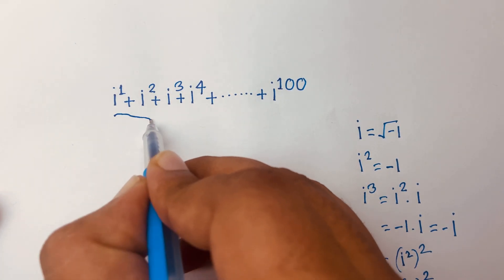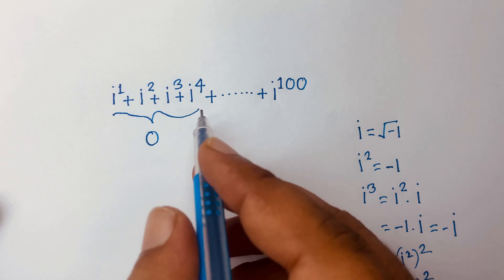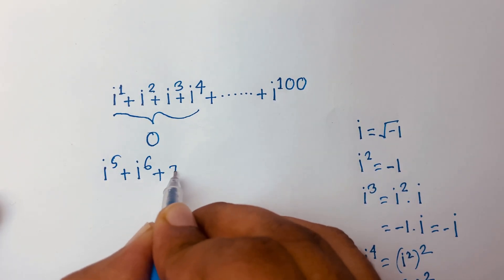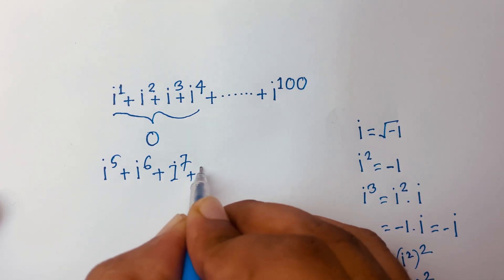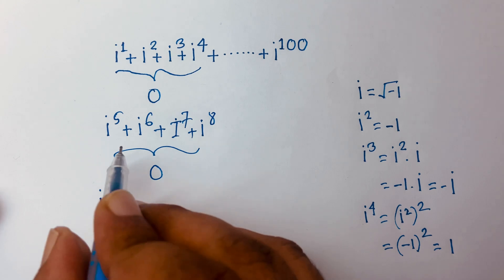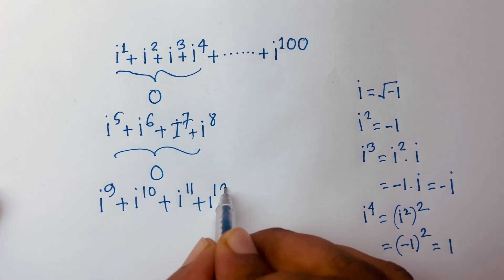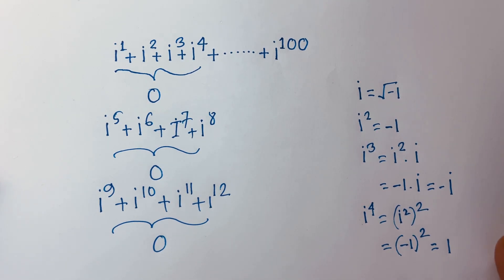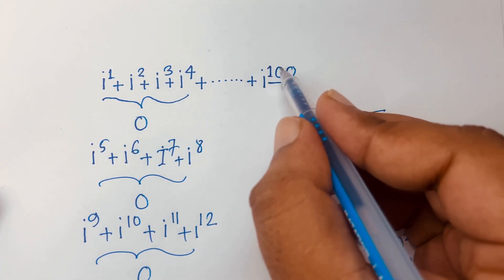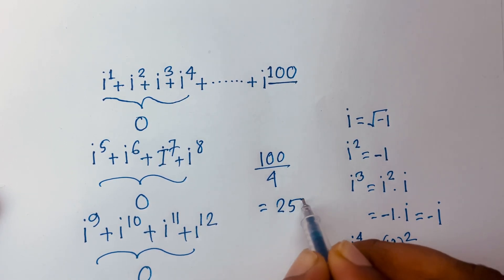Looking back at our series: i plus i squared plus i to the power 3 plus i to the power 4 equals zero. The next four terms — i to the power 5 plus i to the power 6 plus i to the power 7 plus i to the power 8 — also equal zero. And again, i to the power 9 plus i to the power 10 plus i to the power 11 plus i to the power 12 is also zero. The last exponent is 100; dividing 100 by 4 gives 25 with no remainder.